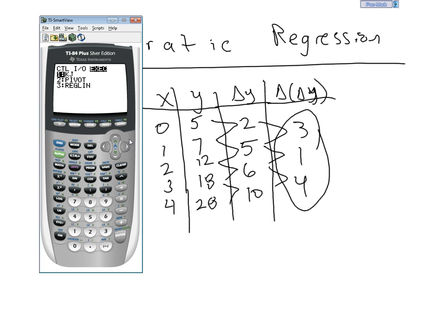Now press program. Scroll over to the exec column and select option 3. Press enter. Press enter again. And what that just did is it pasted the reglin program into this new program that we're calling quadreg.